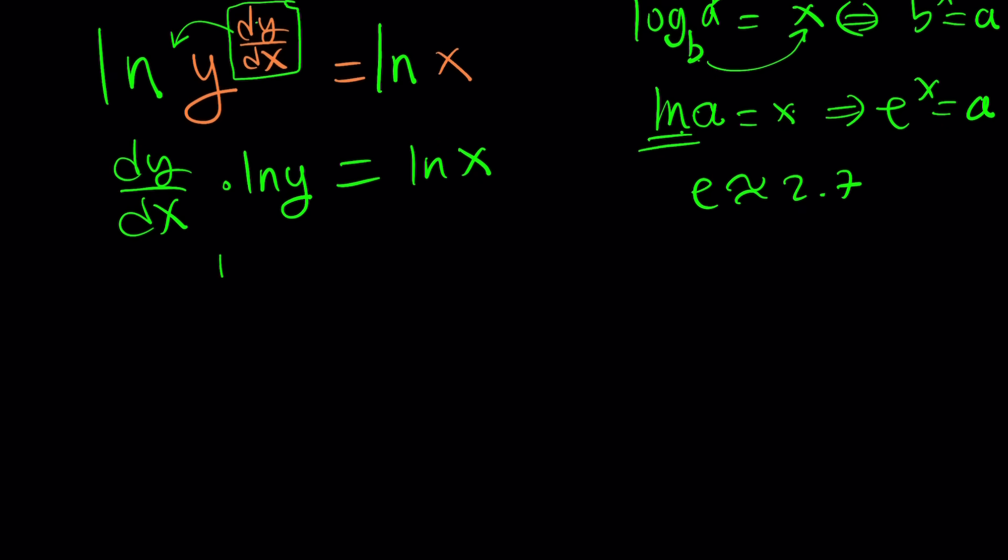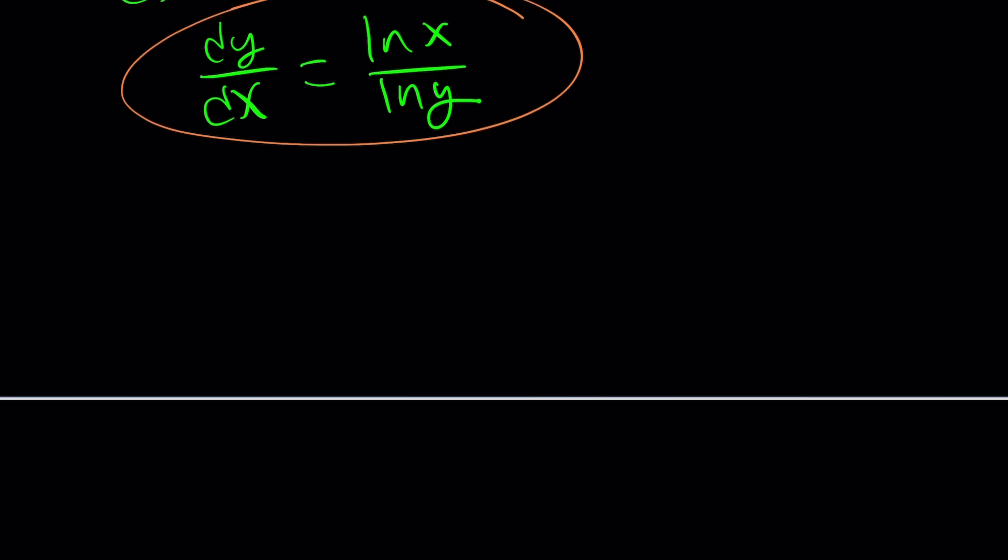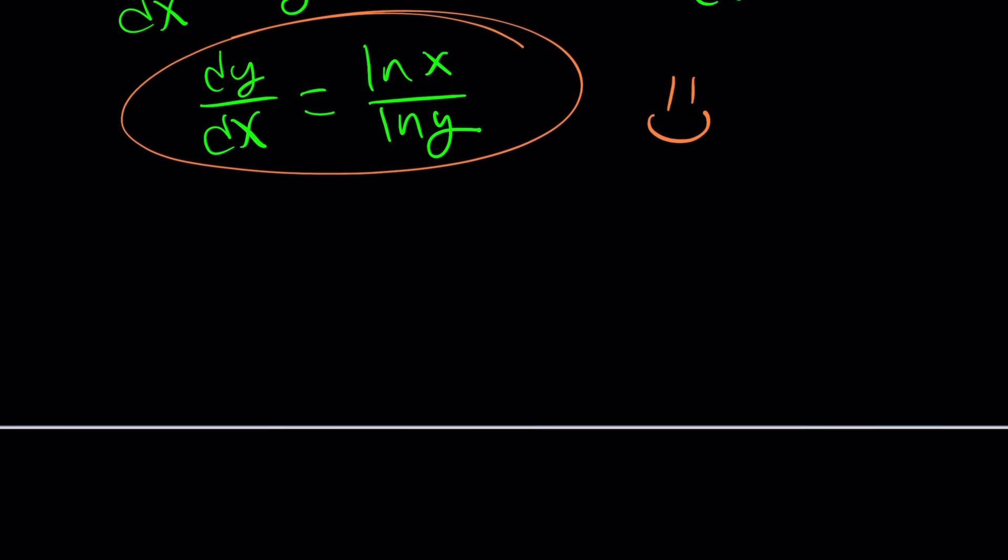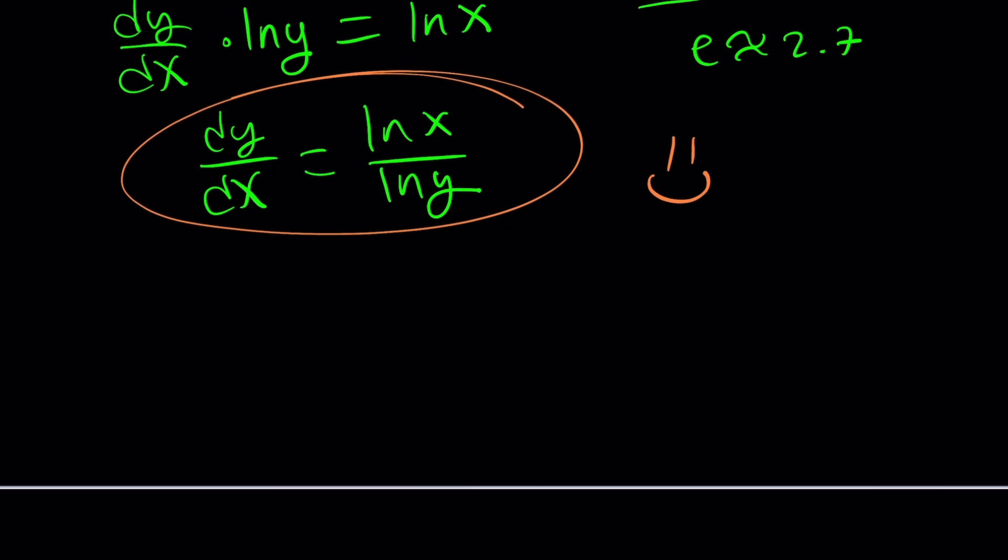Now you might be thinking okay let's just isolate dy/dx and continue with the solution. No, wrong because how are you going to solve it? I'm looking for a function whose derivative equals ln of the independent variable divided by ln of the dependent variable. This is too confusing. Let's simplify this because this is a separable differential equation the best kind you can get. So let's cross multiply and write this as ln y dy equals ln x dx.